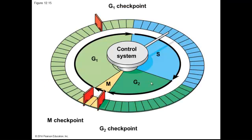Here's what that system looks like. There's a G1 checkpoint — should a cell not need to divide, it will be stopped right there. If the cell is going to divide, that stop is lifted and the cell continues through to the G2 checkpoint at the end of G2, then goes through mitosis and the cell divides. At any one of these three checkpoints, the cell can be told to stop or to go ahead and finish dividing.